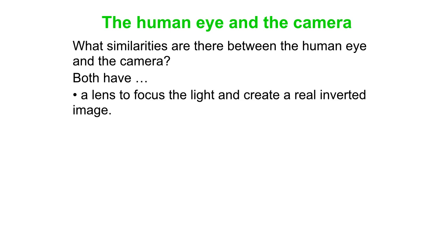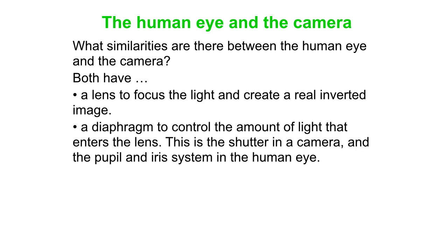Both of them have a lens that focuses the light and it creates a real inverted image. They also have a diaphragm to control the amount of light that enters the lens. And that's simply the shutter in the camera. And of course it's the pupil and iris system in the human eye.